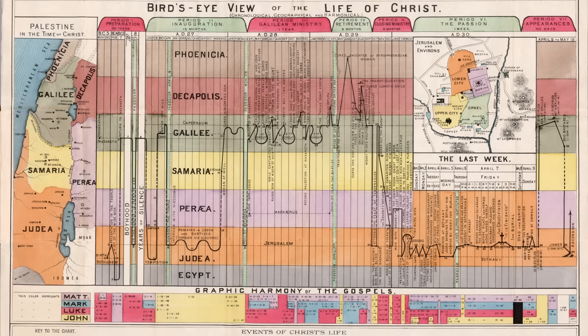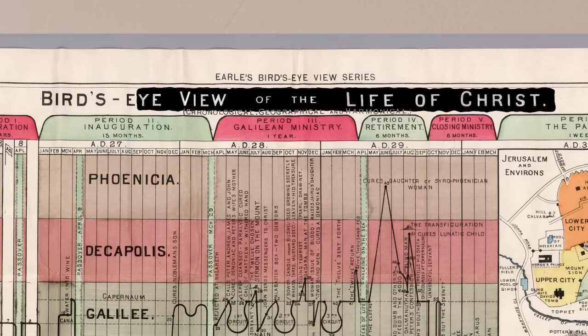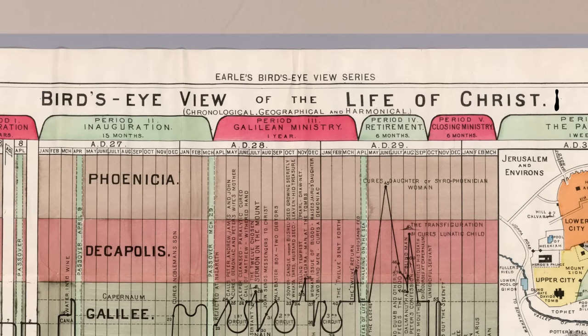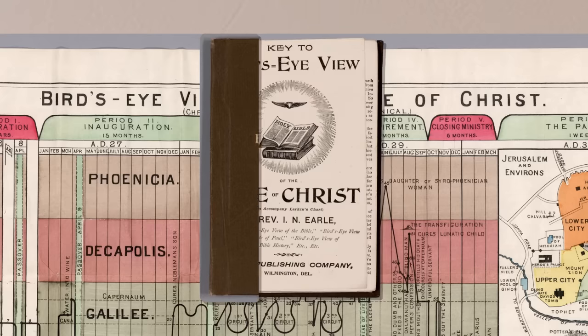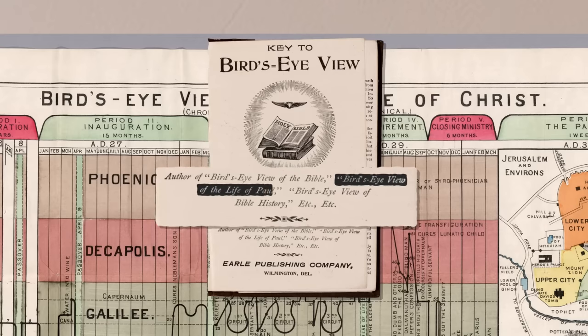The chart we're going to look at today was initially published by Larkin in 1892. However, in 1894, some revisions were made by a Reverend Earl and he published it under the title Bird's Eye View of the Life of Christ. It initially came as a fold-out in a book format, and we can see from the cover page that it was supposedly just one book in a series that also included Bird's Eye View of the Life of Paul and Bird's Eye View of Bible History. However, I scoured the internet and could find no trace of these other titles ever being created.